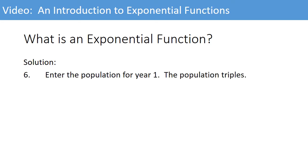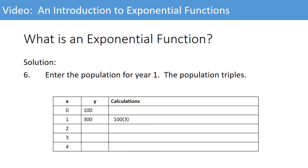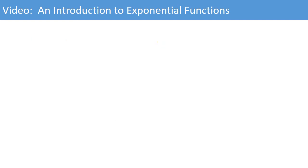Enter the population for year one. The population triples. So at year one, we go from 100 to 300. How do we get that? 100 times three. It's tripled.